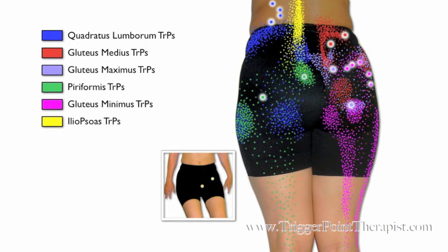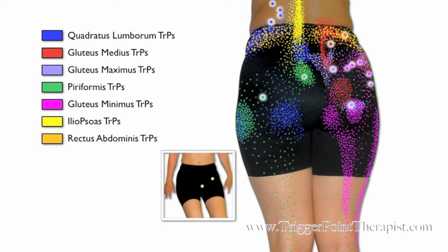And in yellow, we have the iliopsoas trigger points, which are located on the front of the body, but refer a vertical pattern of pain along the lumbar spine. Next in orange, we have the rectus abdominis trigger points, which will cause pain all the way across the iliac crest in the belt-line region.